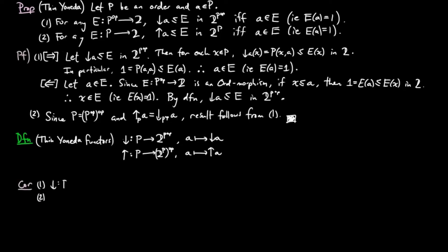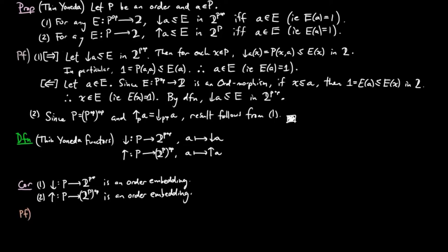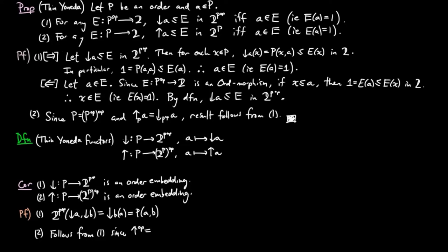Then, as a corollary, we have: 1, the lower segment functor is an order embedding; and 2, the upper segment functor is an order embedding. For the proof, the hom-set in the functor category [p^op, 2] from the lower segment on a to the lower segment on b equals the lower segment of b evaluated on a, which is the hom-set from a to b. And 2 follows from the dual argument, noting that the opposite of the upper segment on p equals the lower segment on p^op, and p^op^op equals p.